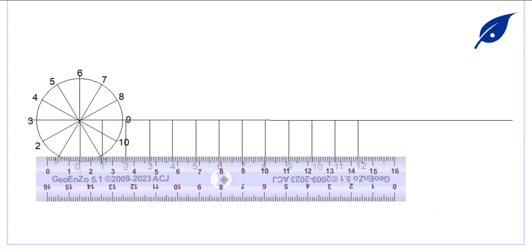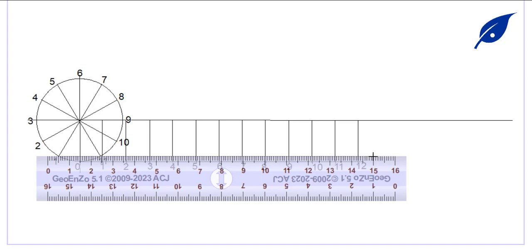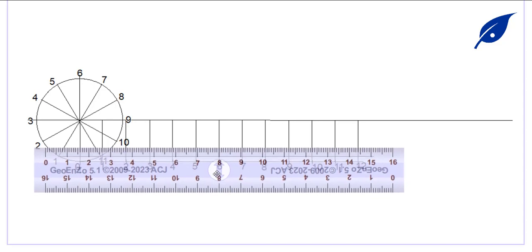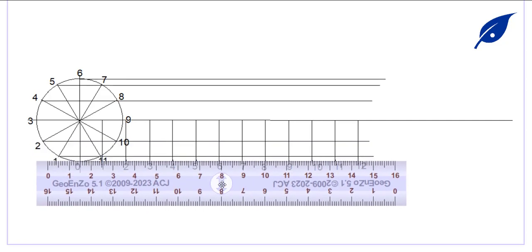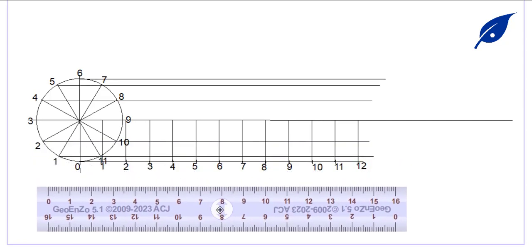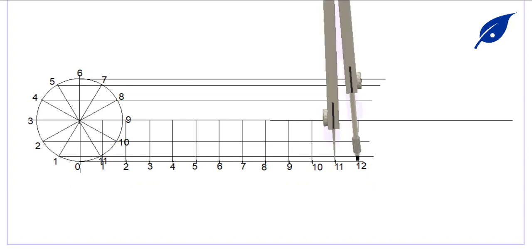We're going to draw a horizontal line from each of the circle's division points. For example, points 1 and 11 are along the same horizontal line, so we extend that line across to the twelfth point. Similarly, points 2 and 10 are on the same horizontal line, and we repeat this process for points 3, 4, 5, and 6.